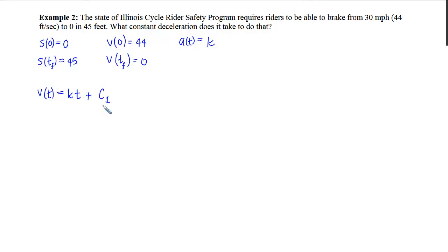In order to find c1 or to nail it down, we have to use a point that we know on the velocity curve. So this particular point will introduce no additional variables, so that's the one I'm going to use. I know that my velocity is 44 when my time is 0. That enables me to solve for that first constant, which will be 44. So now I have the velocity at any time is k times t plus 44, and I've used this piece of information.